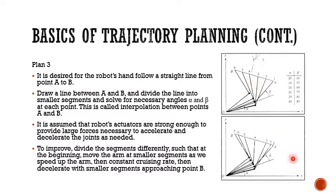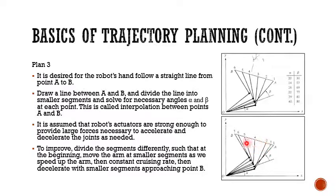Sometimes, during the initial acceleration and deceleration stages, you do the segmentation in a different, nonlinear way — not proportionate. Here you have smaller segments at the start, and smaller segments near the end. When you achieve the cruising velocity, then you can move at a larger segment. This is also another strategy.